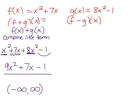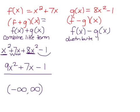For our second operation, f minus g, you can also see this written as (f−g)(x). What we need to do is distribute the negative to all of g, and then just like addition, combine like terms.